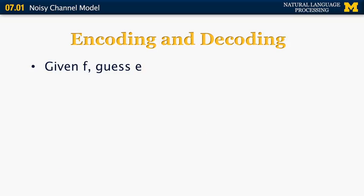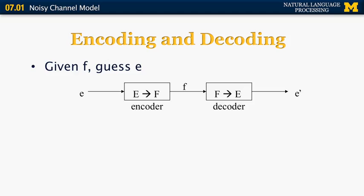We can think of this as a process of encoding and decoding. Given a foreign language string, we want to guess the English language version. We assume that E was converted to F using an encoder, and then we want to build a decoder that converts F back into E. Here I'm using the notation E with an apostrophe to indicate this is just our estimate of E — not necessarily the original E, just our best guess.